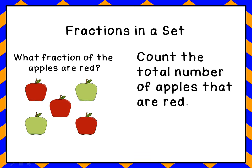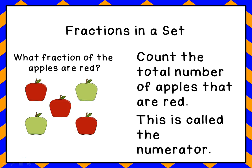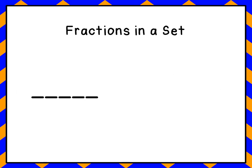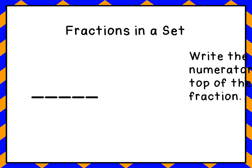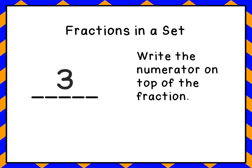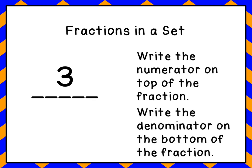Then the next thing we're going to do is, because the question says what fraction of the apples are red, we're going to count just the red apples. This time we have one, two, three — we have three red apples, and that number is called the numerator. It goes on the top of the fraction. We write the numerator on top: we had three red apples, so we write three. We write the denominator on the bottom: we had five apples all together, so three-fifths of the apples are red.